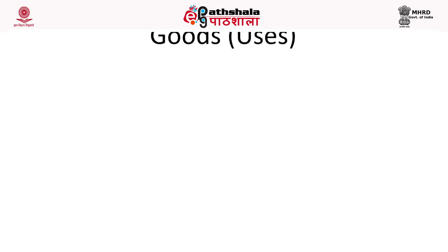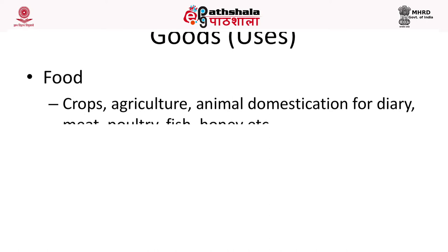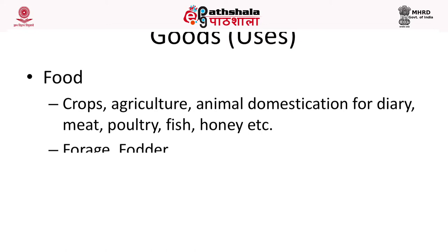The uses of biodiversity obviously include food. Crops, agriculture, animal domestication for dairy, meat, poultry, fish, honey, etc. — all constitute the food that humanity is dependent upon. Not merely humanity, but all organisms inhabiting the planet Earth are directly dependent upon biodiversity for food. More biodiversity means better sustenance. Forage and fodder as well.